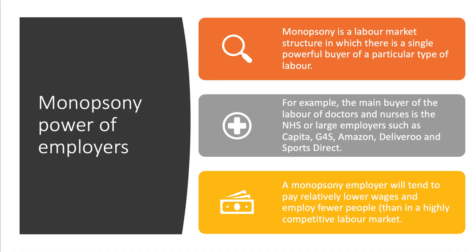Monopsony power is an increasingly important aspect of labour market economics and it's tested more regularly now on exam papers. In a nutshell, monopsony is the employer-led buying power in the labour market — it's when you have a single dominant buyer of a particular type of labour. The NHS, for example, employing doctors and nurses, big employers in service sectors such as Capita, G4S, Amazon, Sports Direct, and the big retailers might be included. And in theory, a monopsony employer will tend to pay relatively lower wages than in a competitive labour market.